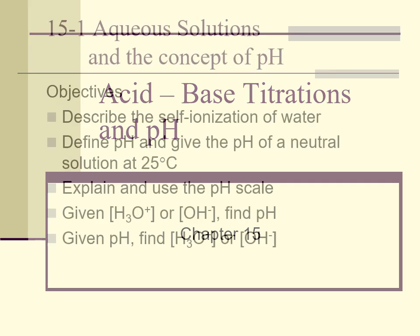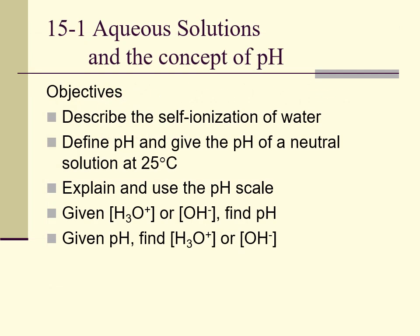This is simply a review of section one. In section one, we talked about self-ionization of water and the fact that we can draw a constant out of that as a product of the two concentrations of hydronium and hydroxide, and that becomes the KW value. We then talked about pH of neutral solutions, the use of pH, and the math behind pH and hydronium and hydroxide ion concentrations and how they are all related together.